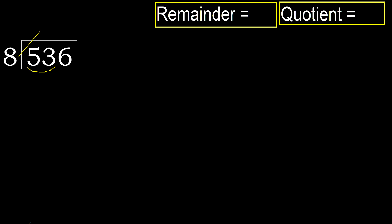53, but not greater. 8 multiplied by 7 is 56, which is greater. Multiply by 6: 48 is not greater. Subtract: 53 minus 48 is 5.